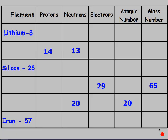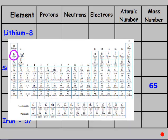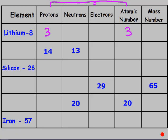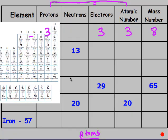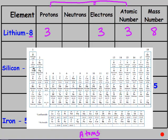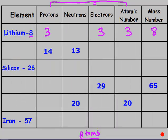Now let's fill out a chart combining everything we've learned. For lithium: the atomic number is 3, so it has 3 protons and, since it's a neutral atom, also 3 electrons. The mass number given is 8, so neutrons = 8 minus 3 = 5. Note that using the periodic table's rounded mass would have given 7, so always use the given mass number. For the next row with 14 protons, the atomic number is also 14, and since it's an atom, electrons = 14 as well. Mass number = 14 + 13 = 27. Looking up atomic number 14 on the periodic table gives silicon, so this is silicon-27.